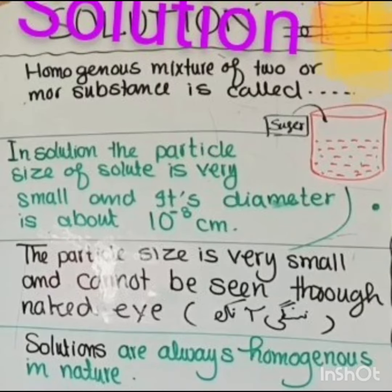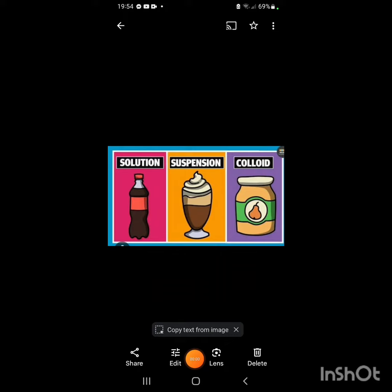A homogeneous mixture of two or more substances is called a solution. In a solution, the particle size of the solute is very small — its diameter is very small and cannot be seen through the naked eye. Solutions are always homogeneous in nature.